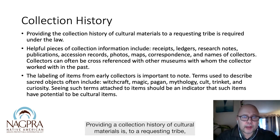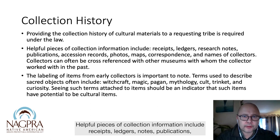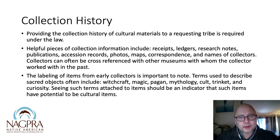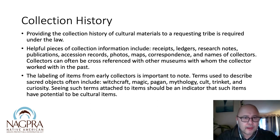Providing a collection history of cultural materials to a requesting tribe is required under the law. Helpful pieces of collection information include receipts, ledgers, notes, publications, accession records, photos, maps, correspondence, and names of collectors. Collectors can often be cross-referenced with other museums they worked with in the past. I made sort of a career on following one collector in the Great Lakes — he operated in over 20 different museums in the Midwest. He was selling, trading, bartering.